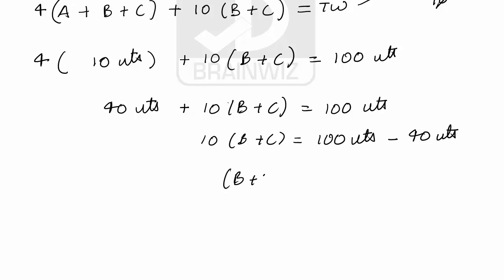Which says B and C have done in 10 days 60 units, so we can clearly understand that B and C have done per day 6 units.